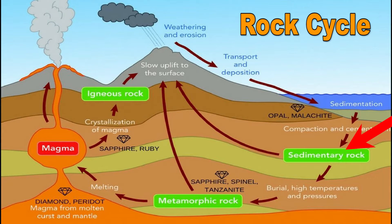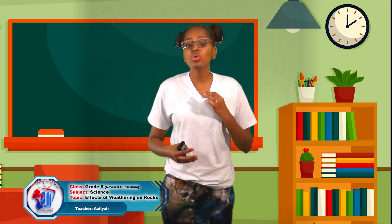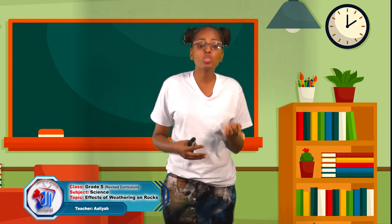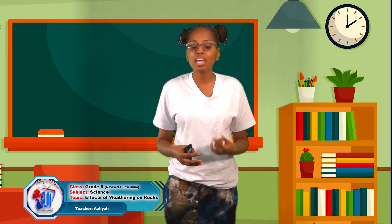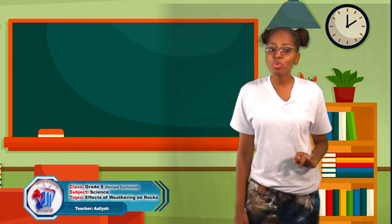Slowly, this sedimentary rock will get covered with other rocks and end up deep in the earth's crust. When pressure and heat get high enough, sedimentary rocks will change into metamorphic rock, and the cycle will start all over again. One thing to note: rocks don't need to follow this specific cycle — they may change from one type to another and back again in no particular order.